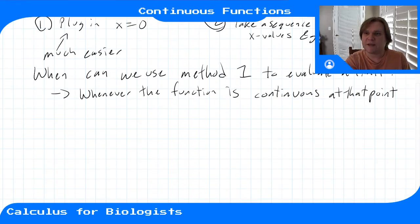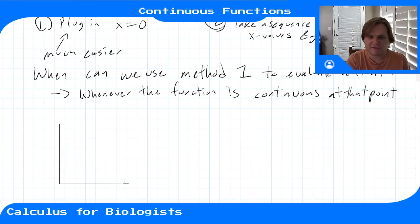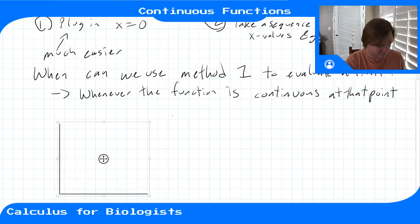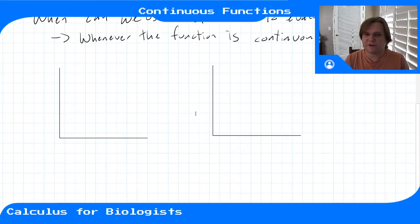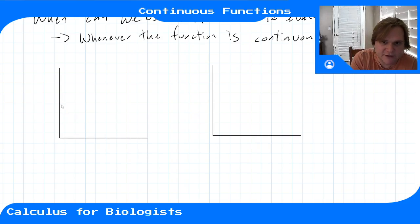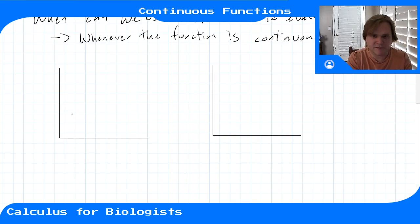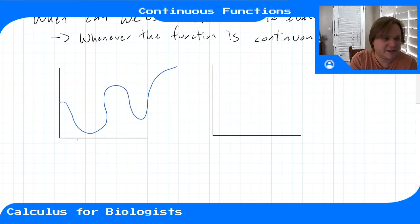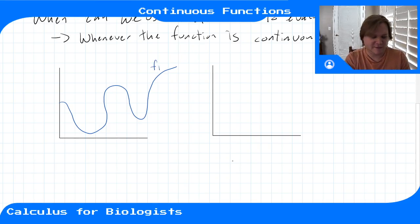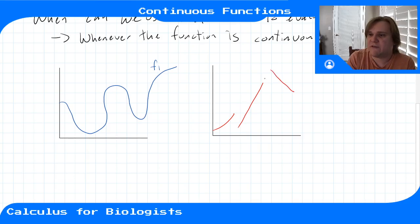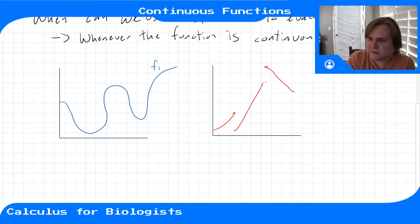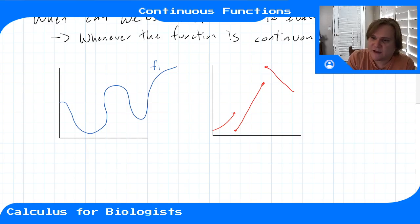What does continuous mean? The basic definition involves graphing the function. A continuous function is a function that I can draw without lifting my pencil. This is a continuous function because I didn't lift my pencil when drawing it. If I lift up my pencil, I now have a discontinuous function because there are jumps in the function values as I approach different points.